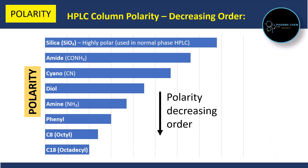So let's get started. Here is the list of different types of stationary phases used in HPLC columns, arranged in decreasing order of polarity. First is Silica, which is highly polar, used in normal phase HPLC. Second is Amide, which is high to moderately polar. Third is Cyano, fourth is Diol, and fifth is Amine — these three are moderately polar. Sixth is Phenyl, which is less polar. Seventh is C8 (Octyl), which is least polar. And eighth is C18, which is non-polar.